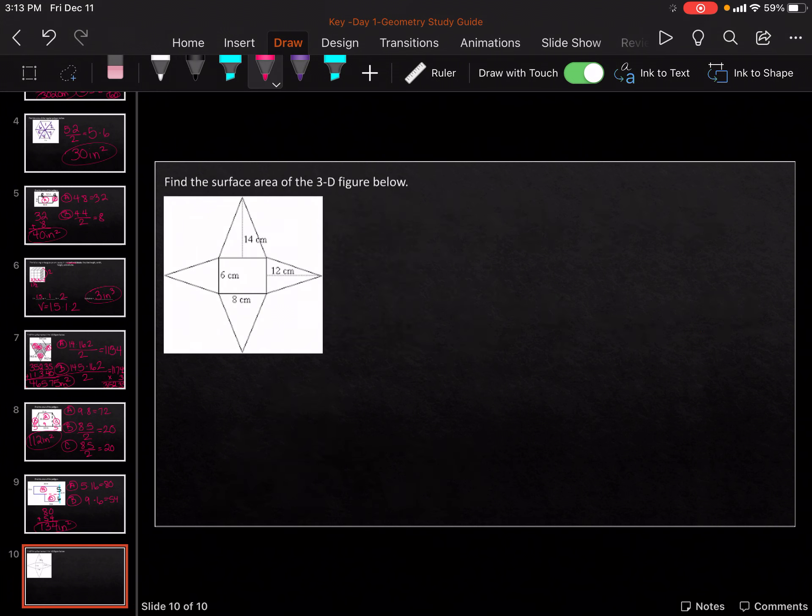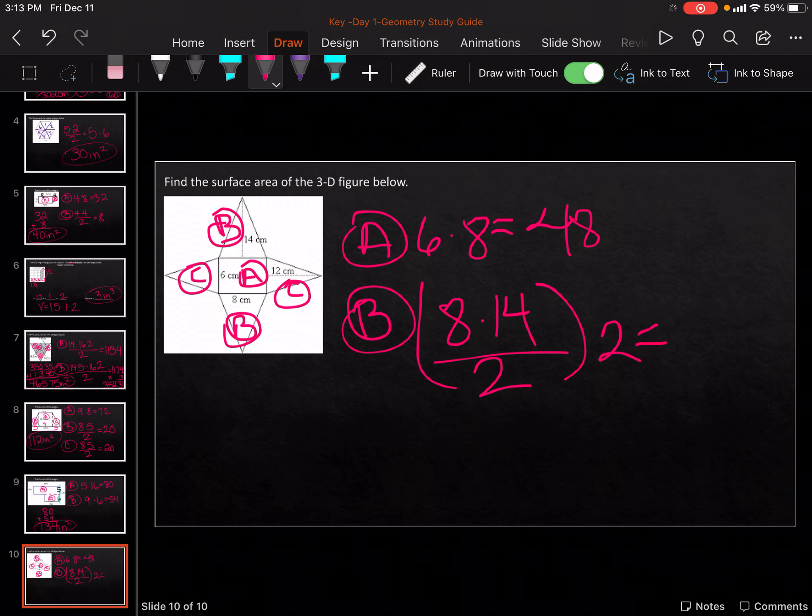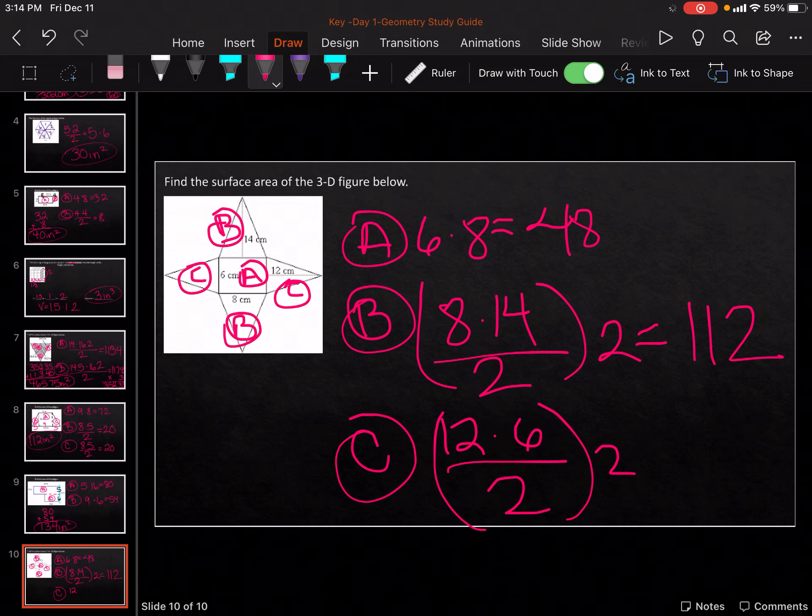This one has an A, 2 B's, 2 C's. So for A, it's going to be 6 times 8. 48. For B, it's going to be 8 times 14 divided by 2 times 2. 8 times 14 divided by 2 times 2 gets me 112. For C, it's going to be 12 times 6 divided by 2 times 2. Divided by 2 times 2 gets me 72. 48 plus 112 plus 72 gets me 232 centimeters squared.